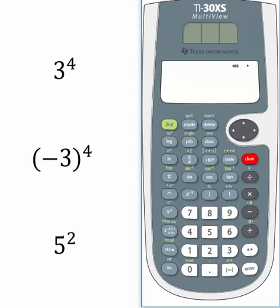We'll simplify the last problem, 5 to the second power. We're going to use a button called the x-squared button. The x-squared button will raise a number to the power of 2 and only 2. The x-squared button is to the left of the number 7 on the calculator. Let's type in the base of 5.